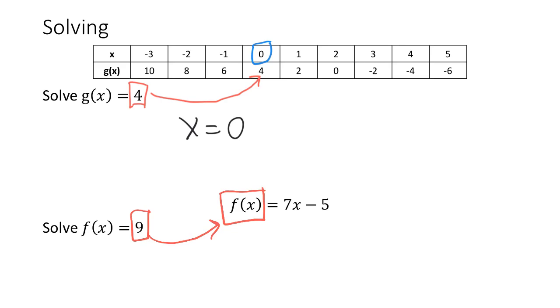So if we wanted to write it out, the statement would be 9 equals 7x minus 5. From here, we need to solve to get the x by itself. First, we could add 5 to both sides of the equation.